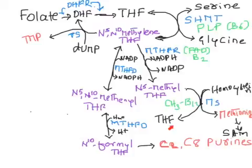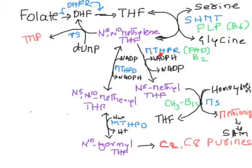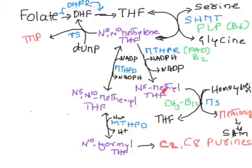If there is a deficiency of vitamin B12, N5-methyl tetrahydrofolate cannot be converted to tetrahydrofolate, meaning THF becomes trapped as N5-methyl tetrahydrofolate. Since MTHFR is irreversible, N5-methyl THF cannot go back to N5,N10-methylene THF. This situation is called the methyl trap or folate trap — tetrahydrofolate is trapped as N5-methyl tetrahydrofolate — and this occurs in vitamin B12 deficiency.